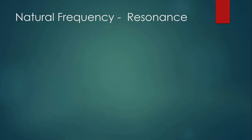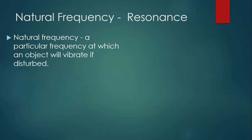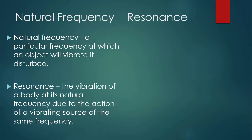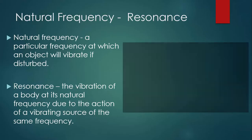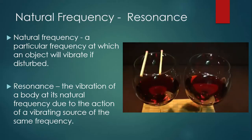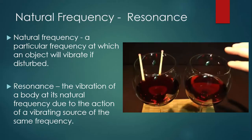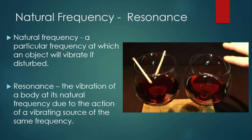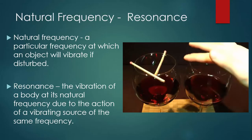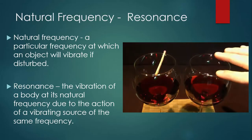Finally, we'll talk about natural frequency and resonance. The natural frequency of an object is the particular frequency that the object will vibrate if disturbed. When you pluck a guitar string, it vibrates at its natural frequency. Resonance is the vibration of a body at its natural frequency due to the action of a vibrating source of the same frequency. These two glasses are filled up to the same level. And when the glass on the right is disturbed and makes that obnoxious sound, the matchsticks on the glass on the left kind of wiggle around and then fall off. That's evidence of resonance. The vibration of the glass on the right causes the glass on the left to also vibrate.